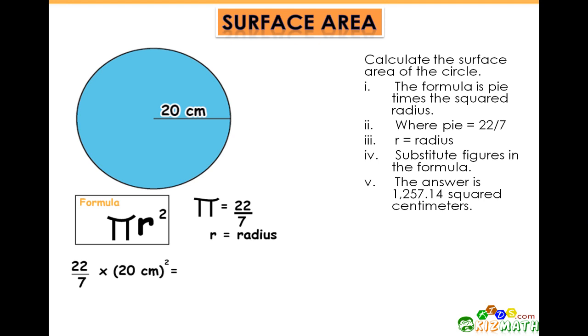Here we have 22 sevenths multiplied by 20 centimeters squared, which is equal to 3.143 times 400 centimeters squared, for an answer of 1,257.14 square centimeters.